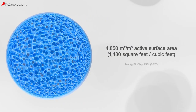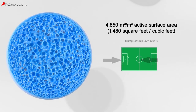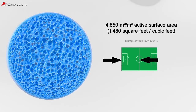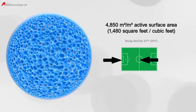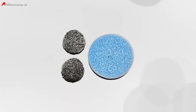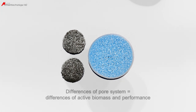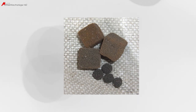The active surface area of the Mutag Biochip is certified at 4,850 square meters per cubic meter, or 1,480 square feet per cubic feet. It is, however, not the surface area alone which is important for the removal performance, but crucially the amount of active biomass in the pore system. A pure surface comparison of porous carriers is not correct and can lead to extreme differences in removal performance.